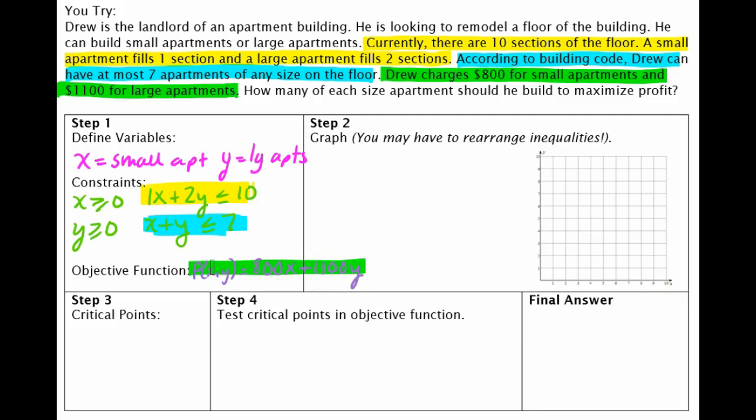Alright, so now we have to graph. The first two inequalities, these x greater than or equal to zero and y greater than or equal to zero, those don't really have to get graphed. If we did, they would just be along the x and the y axis. And I don't want to draw on the x and y axis, otherwise we won't be able to see our numbers. So I'll come back to that.